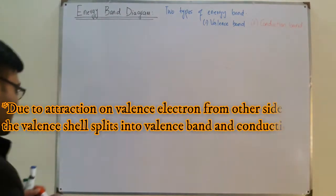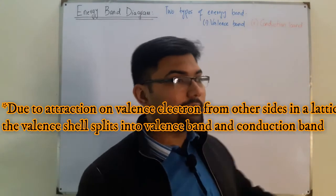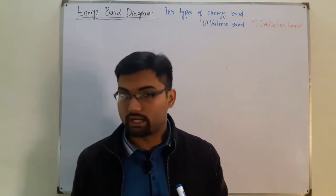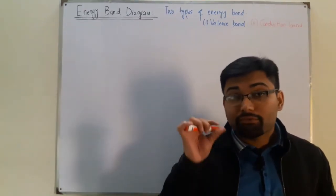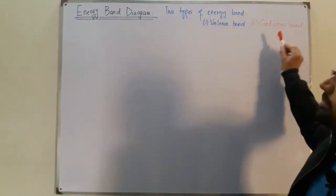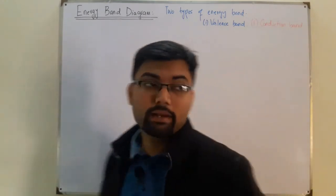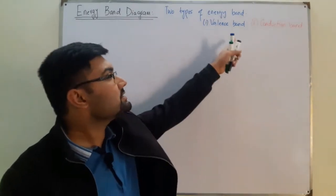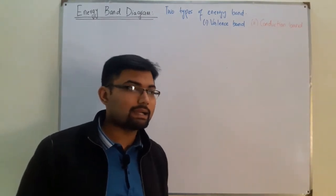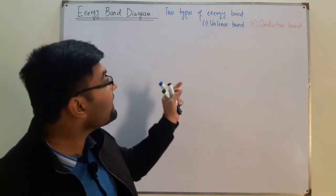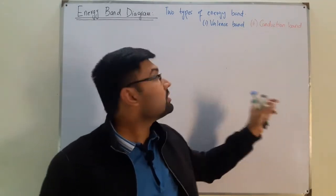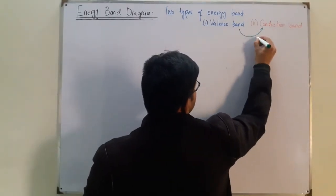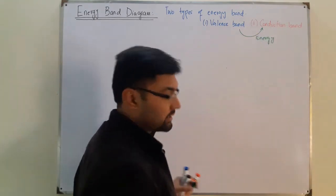The charge carriers are electrons, and conduction is due to electrons. But for an electron to conduct, it must be in the free state. That free electron is present in the conduction band. The valence band represents the valence shell of the atom. If the electron is in the valence shell, it is not conducting any electric current. Only when it transfers to the conduction band can it conduct.